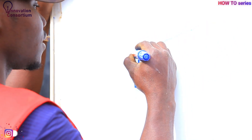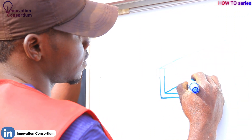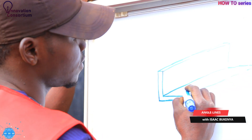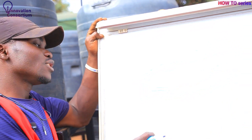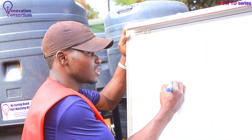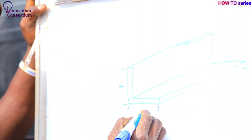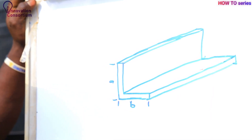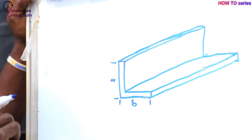Taking the measurements of this angle line, we shall take the width and the height. Let's take the height to be A and the width to be B. The other measurement will be the length. The standard length of most materials, be it angle lines or pipes, is always 6 meters or 5.8.